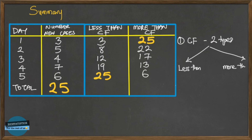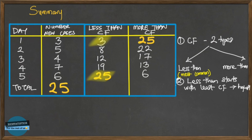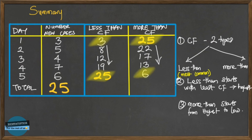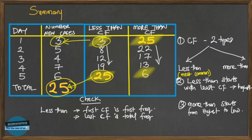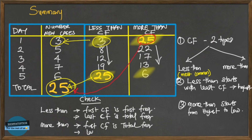In summary, we have two types of cumulative frequency: less-than and more-than. Less-than is the most common. Less-than starts with the least cumulative frequency and goes to the highest. More-than starts from the highest and goes to the lowest. For less-than, the first cumulative frequency equals the first frequency, and the last cumulative frequency equals the total frequency. For more-than, the first cumulative frequency equals the total frequency, and the last cumulative frequency — I'll leave that for you to figure out.